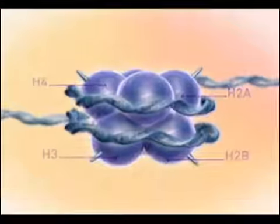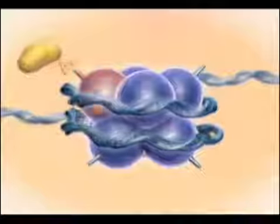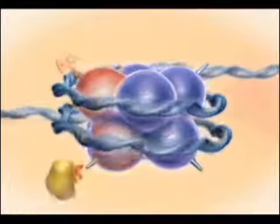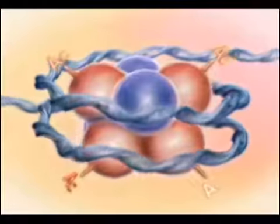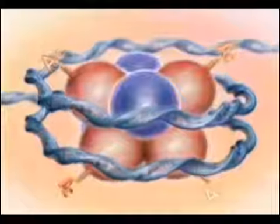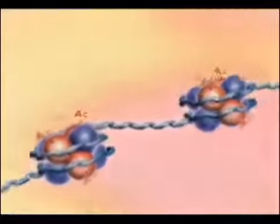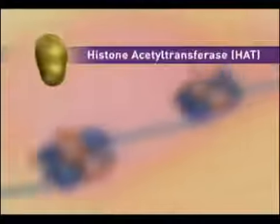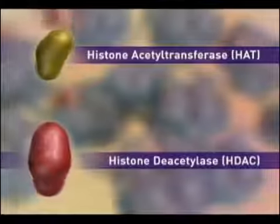Epigenetic modifications such as histone acetylation occur at the amino terminal tails of the histones that protrude from the nucleosomes. Acetylation of histones is generally acknowledged to play a key role in the regulation of gene expression. Histone acetylation is controlled by the balance in the activity of two enzymes: histone acetyltransferase or HAT, and histone deacetylase or HDAC.